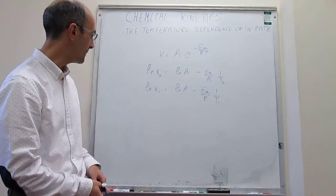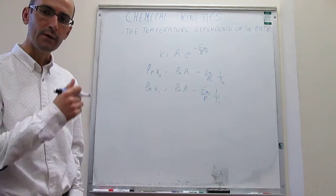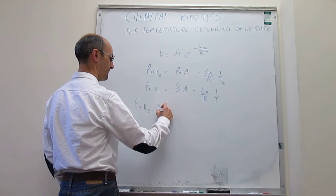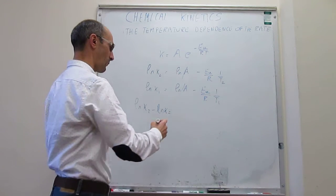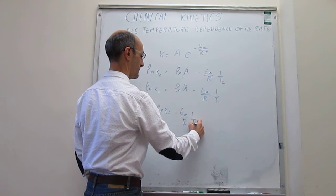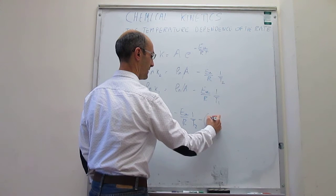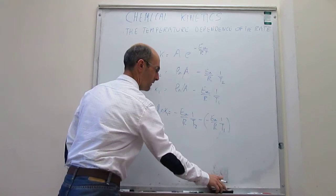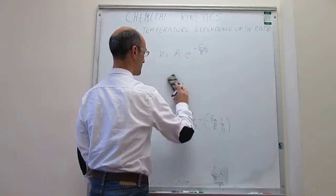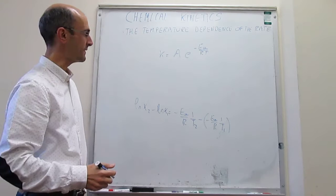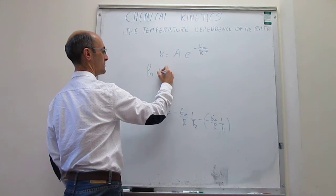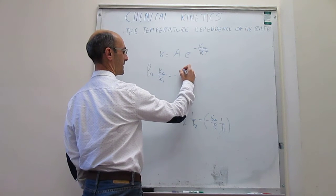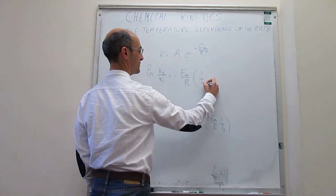So if we take the top expression minus the bottom expression, we can arrive at an equation that consolidates what we want. Natural log of K2 minus natural log of K1 — the pre-exponential factor terms cancel each other out — and what we'll have is: minus the activation energy over R times 1 over T2, minus minus the activation energy over R times 1 over T1. We can simplify this: the difference of two natural logs is the natural log of the ratio, so we get natural log of K2 over K1 equals minus Ea over R, times (1 over T2 minus 1 over T1).